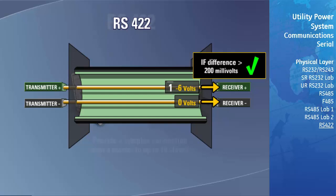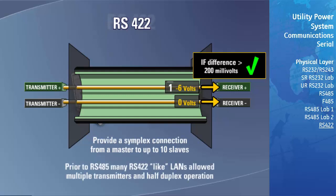The original intent of this LAN was to provide a simplex connection from a master to up to 10 slaves. Prior to the release of RS-485, there were many RS-422-like LANs developed by various vendors that allowed multiple transmitters and half-duplex operation.